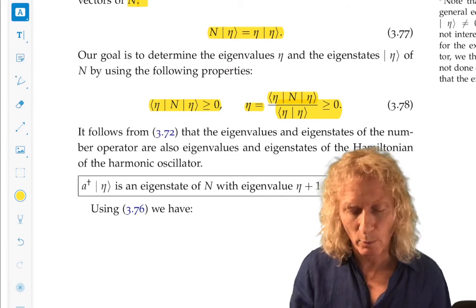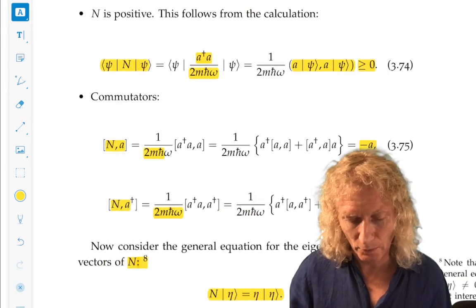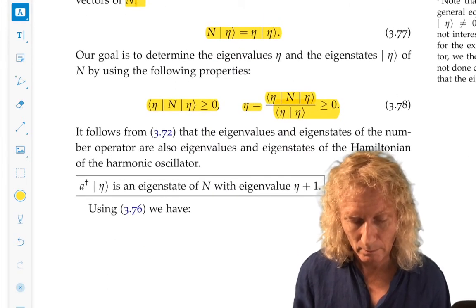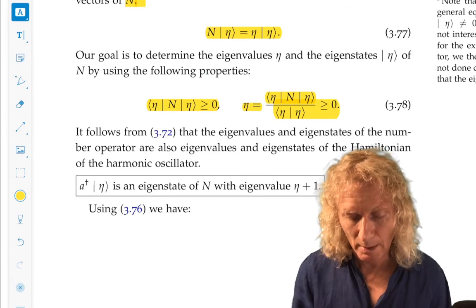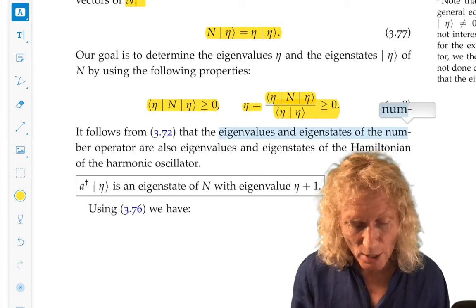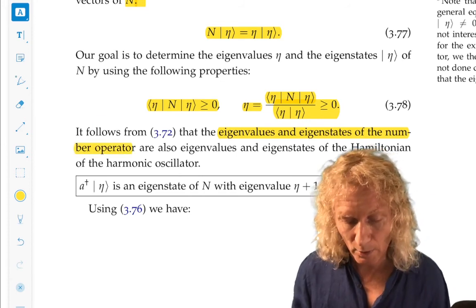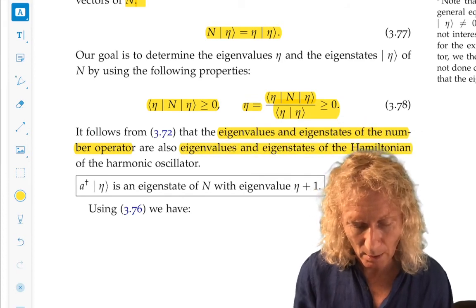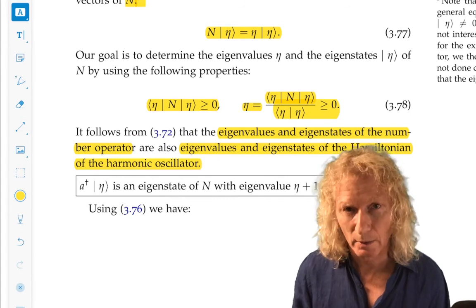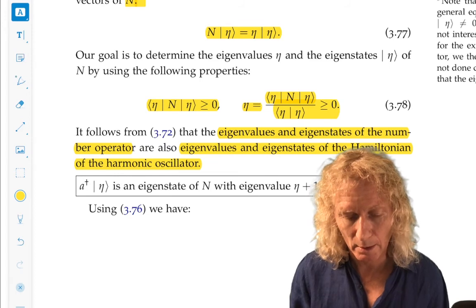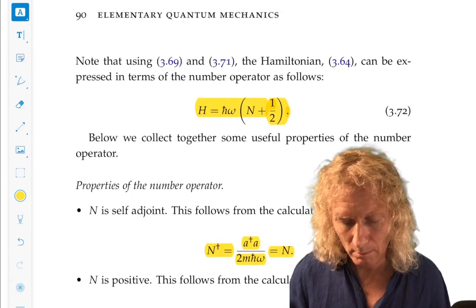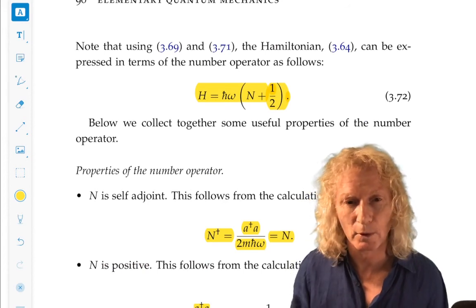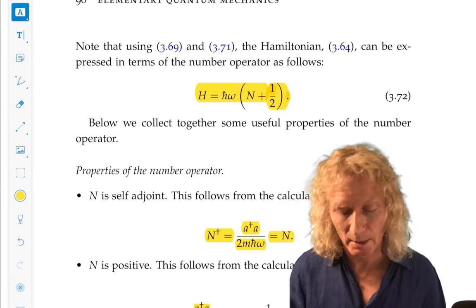Okay. Now it's a simple, now we worked out all these properties. Commutators, number operators, so on. Go back and check them all. But what you can easily do now is verify that the eigenvalues and eigenvectors of the number operator are also eigenvalues and eigenstates, eigenvectors of the Hamiltonian, the harmonic oscillator. Check this. Check this. Go back. Plug in. Go back to the top. Let H act on ket eta. Work it through and you see you're going to get a constant times ket eta.